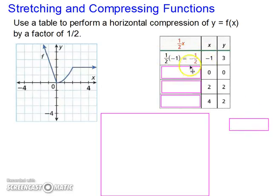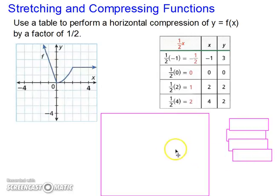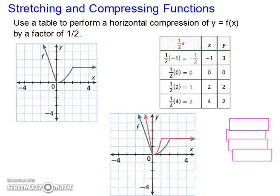So, 1/2 times -1 gives us an output of -1/2. 0 times anything is still 0. 1/2 times 2 is 1. And 1/2 times 4 is 2. So, now we plot our original y values because those were the ones that did not change, and our new x values. And we have successfully compressed the graph closer to the y-axis. And that ends our lesson on exploring transformations.